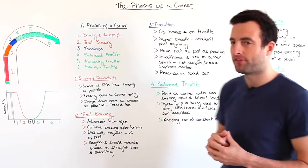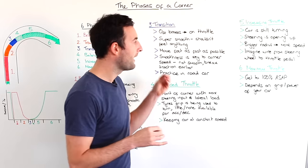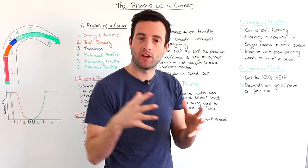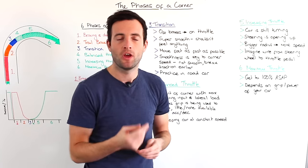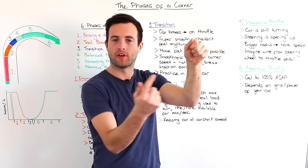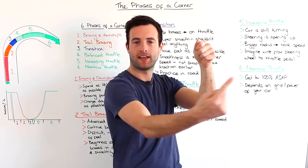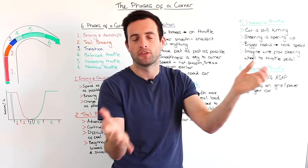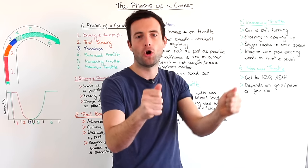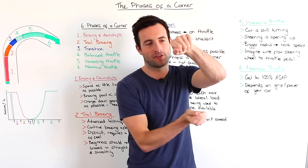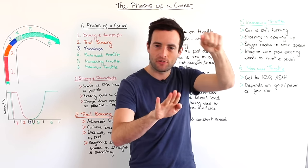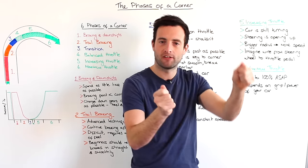In stage five the car is still turning, however the steering is beginning to open up as you exit the corner. As you open up the radius of the corner you're able to accelerate more. Imagine two roundabouts: a very small one where you need lots of steering angle and can only go around at 20 mph before breaking traction, versus a larger roundabout with a bigger radius where you might go around at 40 mph. So as you open up the steering coming out of the corner you can accelerate more. A simple way to remember this is to imagine a piece of wire going from the top of the steering wheel to the accelerator pedal — as you open up the steering it allows you to get more on the accelerator as you bring the steering towards a straight line.